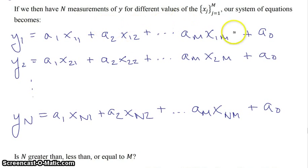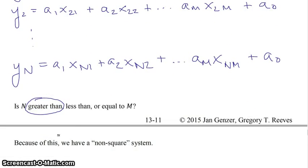And so for each one of these equations, we have m x's, but we have n equations. So the number of x measurements we have is n times m. So the question is, is n greater than, less than, or equal to m? Well, of course, it's greater than because if it weren't, if it were equal, then we have a square system. If it's less than, then we have an underdetermined system. But we have too much information in these cases. We have an overdetermined system. And it's called non-square because the matrix is non-square.